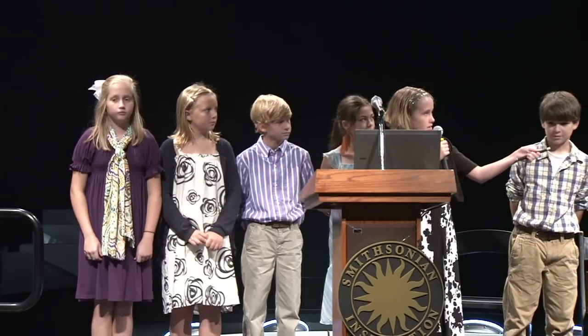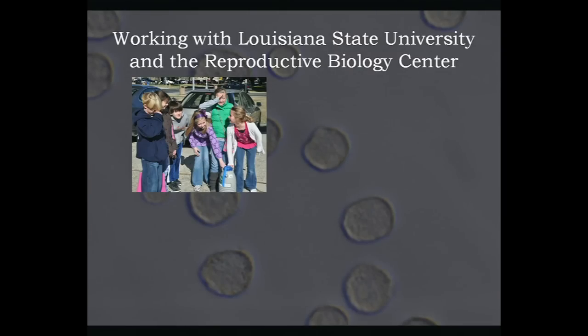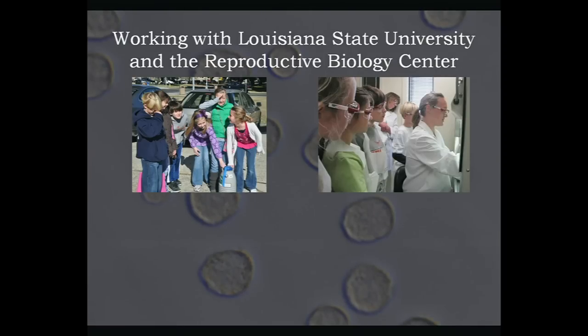We began working with LSU and the Reproductive Biology Center in St. Gabriel. First, we met at the LSU Agriculture Center to pick up our myoblasts that were contained in liquid nitrogen. Then we drove to St. Gabriel at the Reproductive Biology Center, and we had to create the medium for our myoblasts to sit in. This medium was DMEM, 4.5 grams per liter of glucose, with 10% fetal bovine serum, and HEPES. HEPES controlled the pH levels in space. Glucose gave the myoblasts sugars, and the fetal bovine serum provided the myoblasts with proteins to survive.